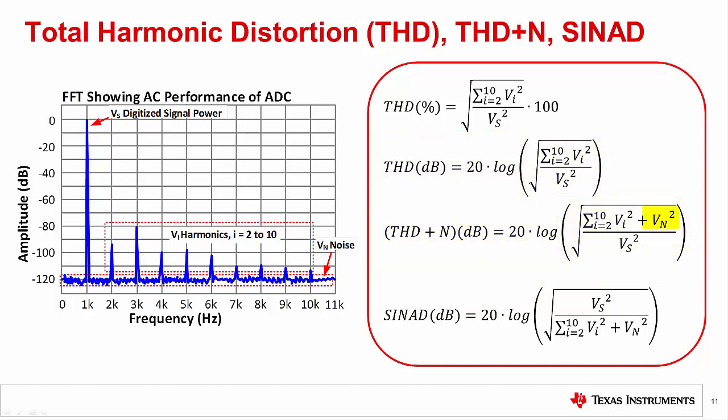THD plus N is similar to THD, except that it includes the total RMS noise in the calculation. SINAD is short for signal-to-noise and distortion. Mathematically, SINAD is simply the reciprocal of the THD plus N calculation.